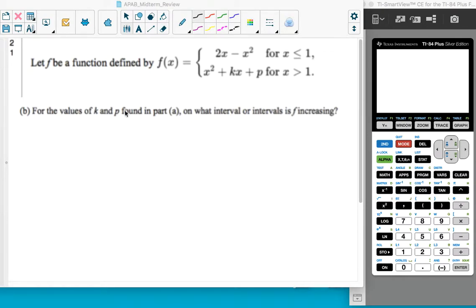All right, this is AP AB calculus. We are doing the midterm review. This is free response 21B, which is a non-calculator free response.